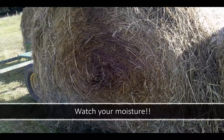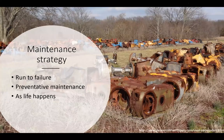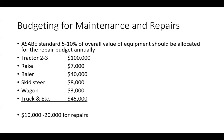For general maintenance strategy, you have three options: run to failure, preventive maintenance, or deal with it as life happens. For budgeting repairs, the ASABE standard generally suggests allocating five percent of the overall value of your equipment annually for a repair budget. It doesn't mean you'll use it every year — maybe one year you're fine, but the next year you blow an injector pump, drop a valve, or blow a tire. Anywhere from five to ten percent is the general guidance.